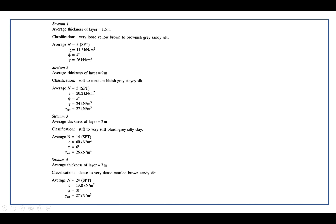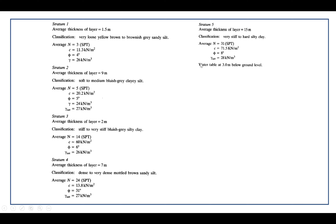SPT N equals 3 for layer 1, cohesion c equals 11.3 kN per square meter, friction angle equals 4 degrees, and gamma density of soil equals 26 kN per cubic meter for layer 1. For layers 2, 3, 4, and 5, the water table is at level 3.0 from the ground surface.